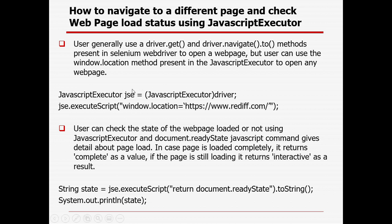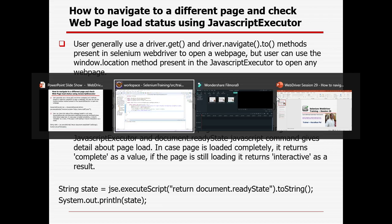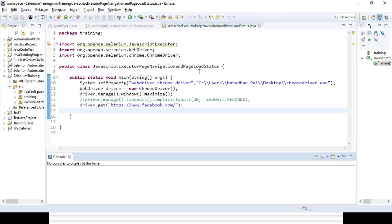So for that, first we need to create an object reference for the JavaScript executor. With the help of that object reference, we need to use the executeScript method and window.location, where we need to pass the URL to open any web page. Let's see how we can do it with the help of Eclipse.